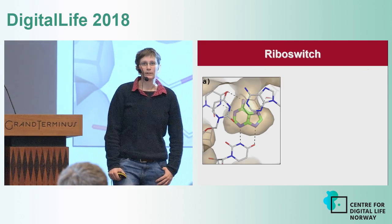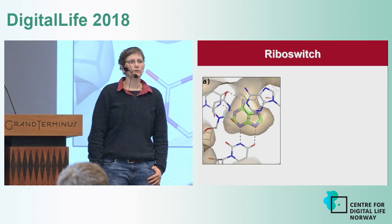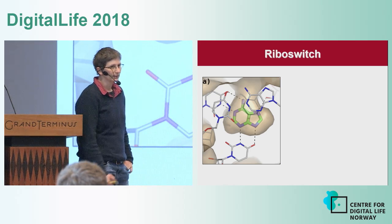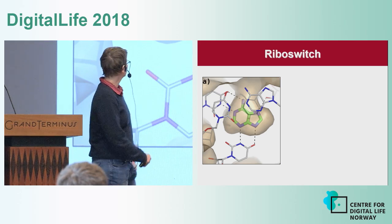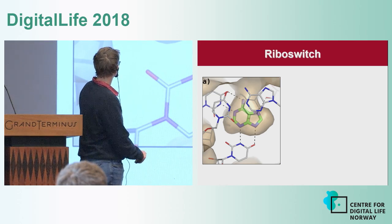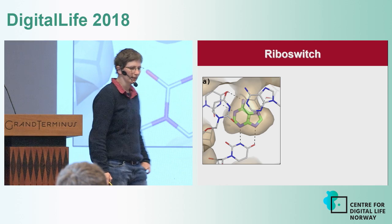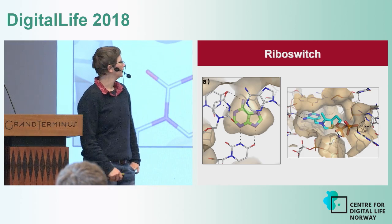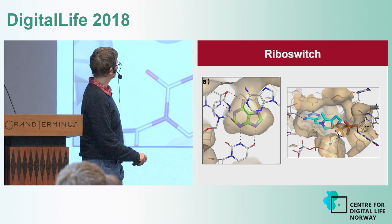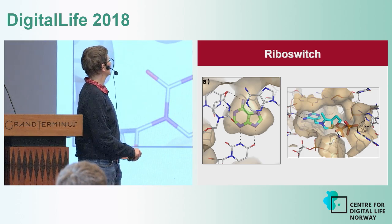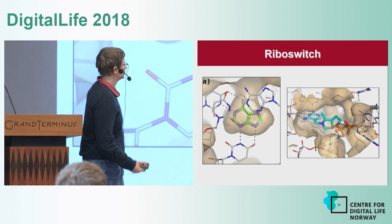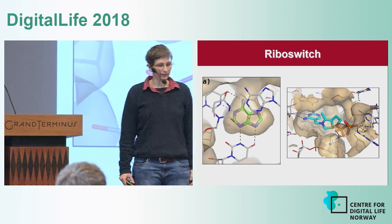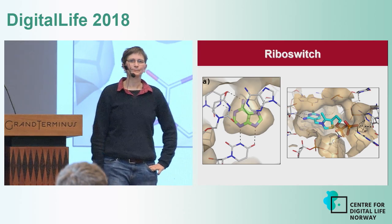Quite a few crystal structures of different riboswitches have been determined. This is an example of the adenine riboswitch, which has a rather small binding site. And this is an example of a TPP riboswitch, which has a rather large binding site that resembles a protein binding site, which is favorable for drug targets.